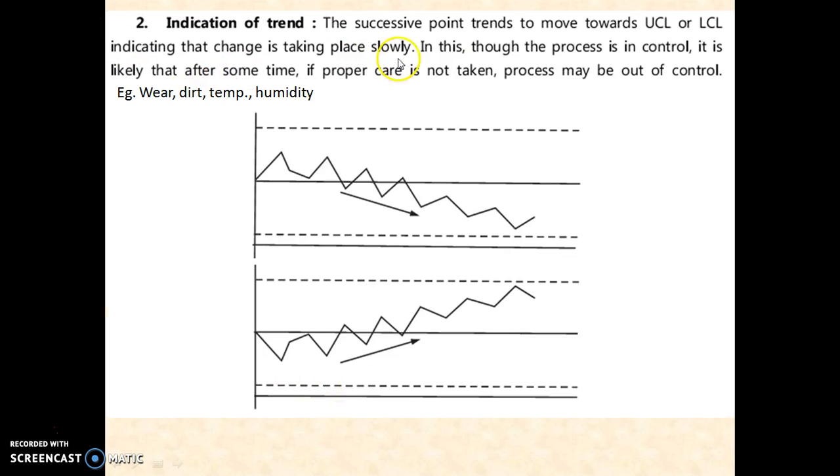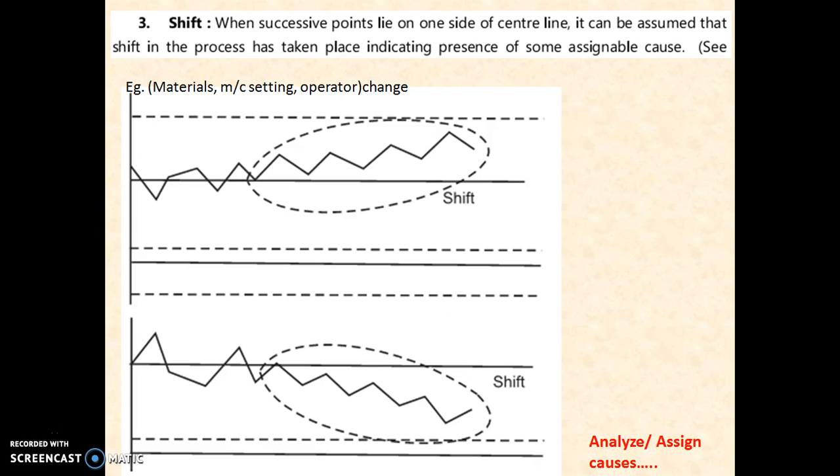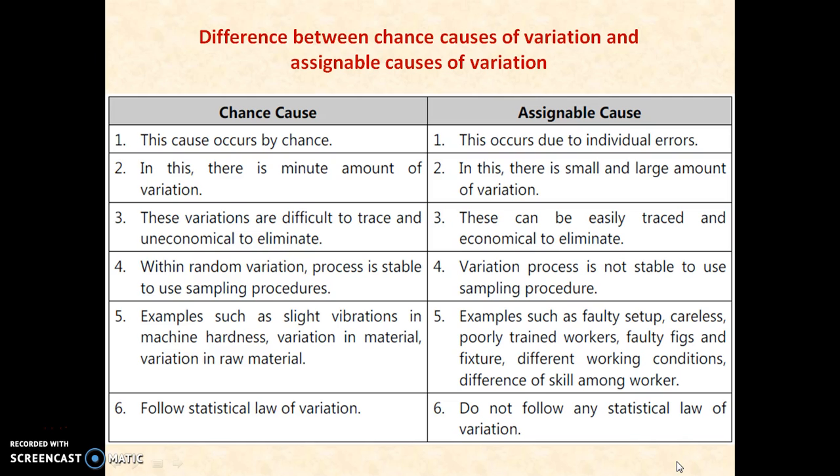In such patterns, we can analyze it for any inherent or external reasons. In this case, it could be because of different process parameters, for example, presence of air, dirt, temperature, and humidity. You can specifically assign a cause for this shift towards upward or lower specification limits. Broad categories are chance causes or assignable causes. You can systematically assign a particular cause to a particular type of variation.